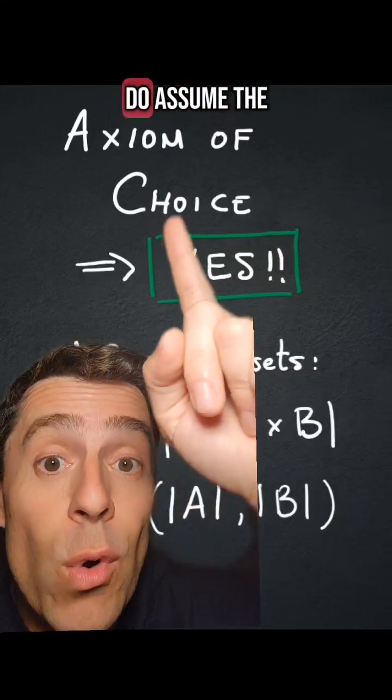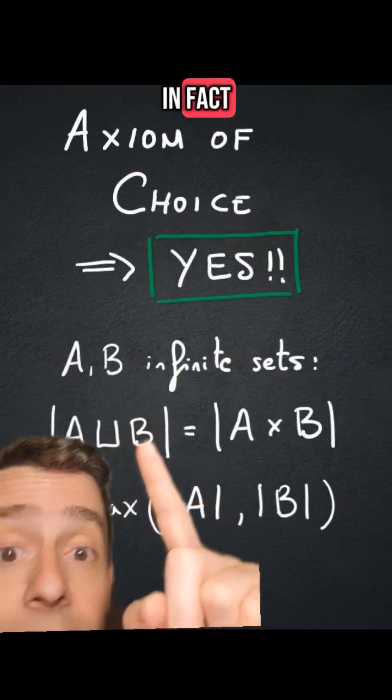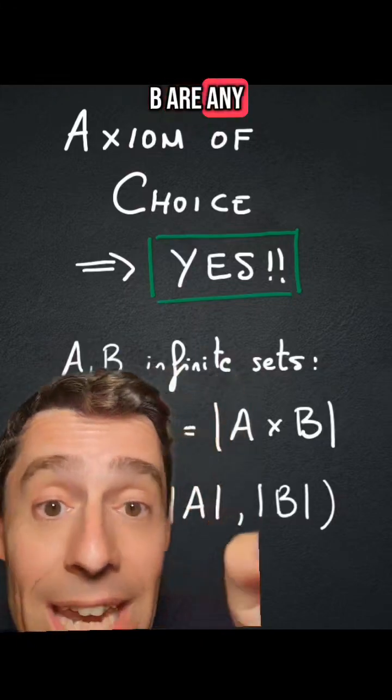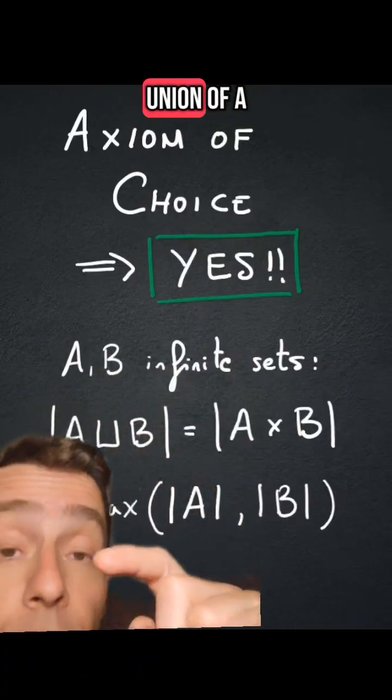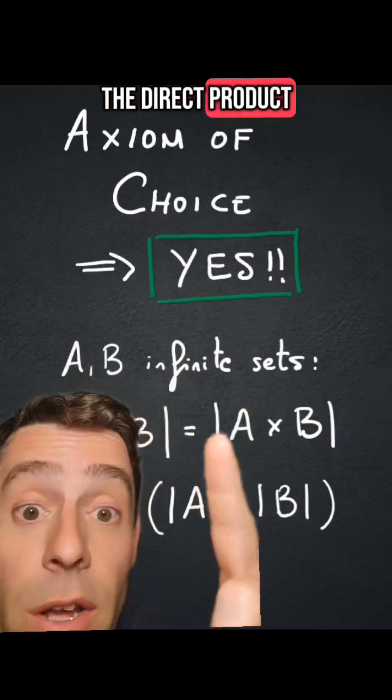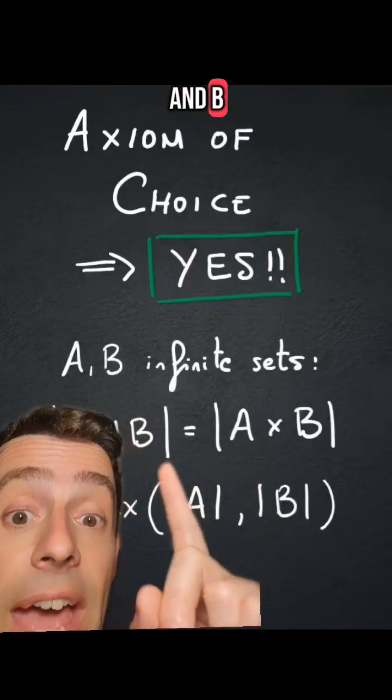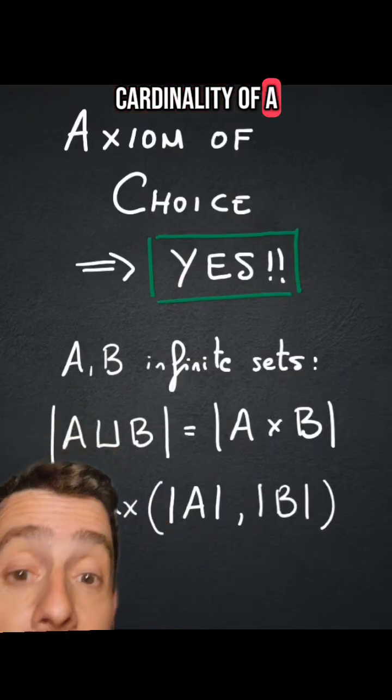So if you do assume the axiom of choice, then the answer is yes. And in fact, if A and B are any infinite sets, then the cardinality of the disjoint union of A and B is equal to the cardinality of the Cartesian product of A and B, and it's equal to the maximum cardinality of A and B.